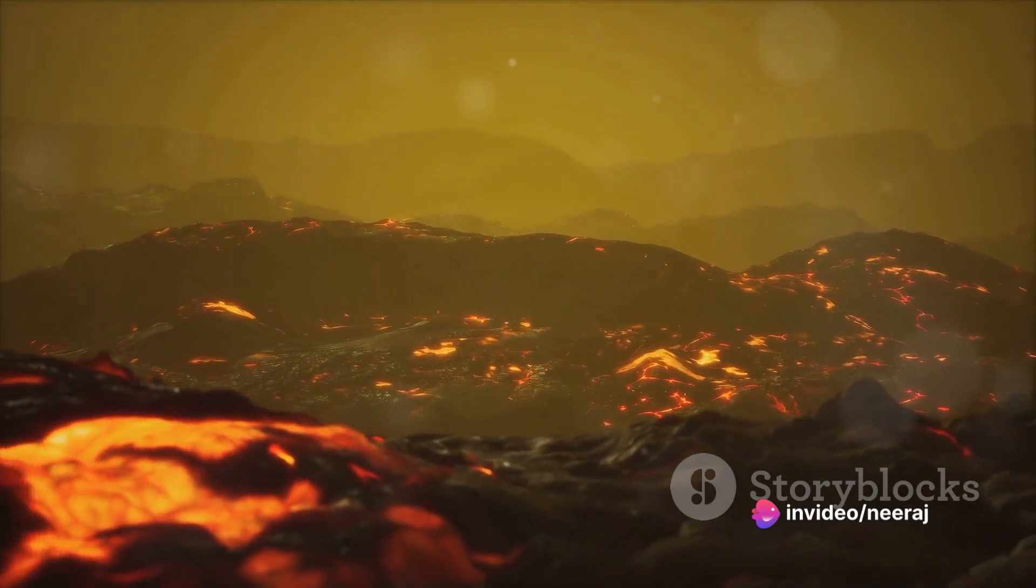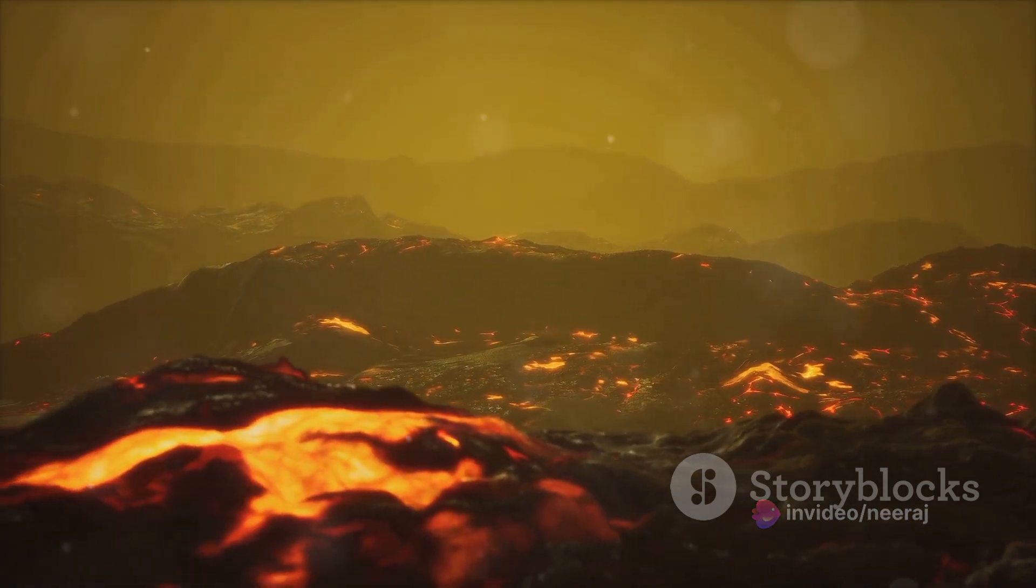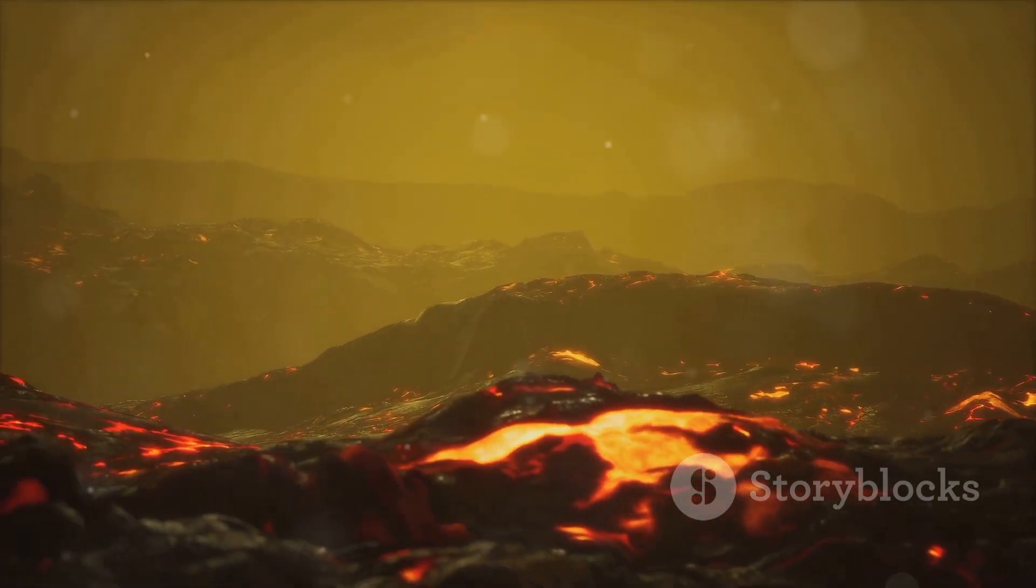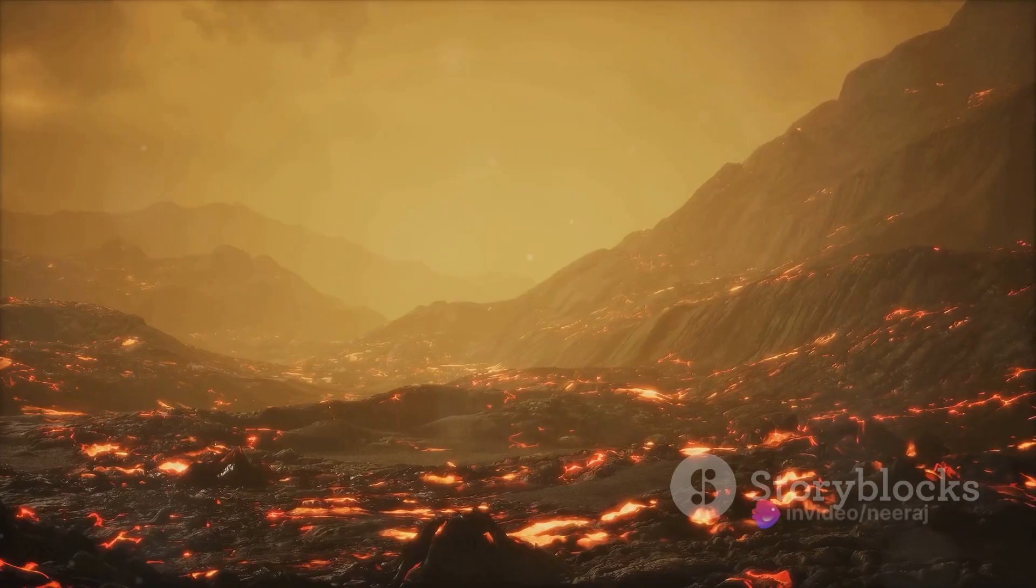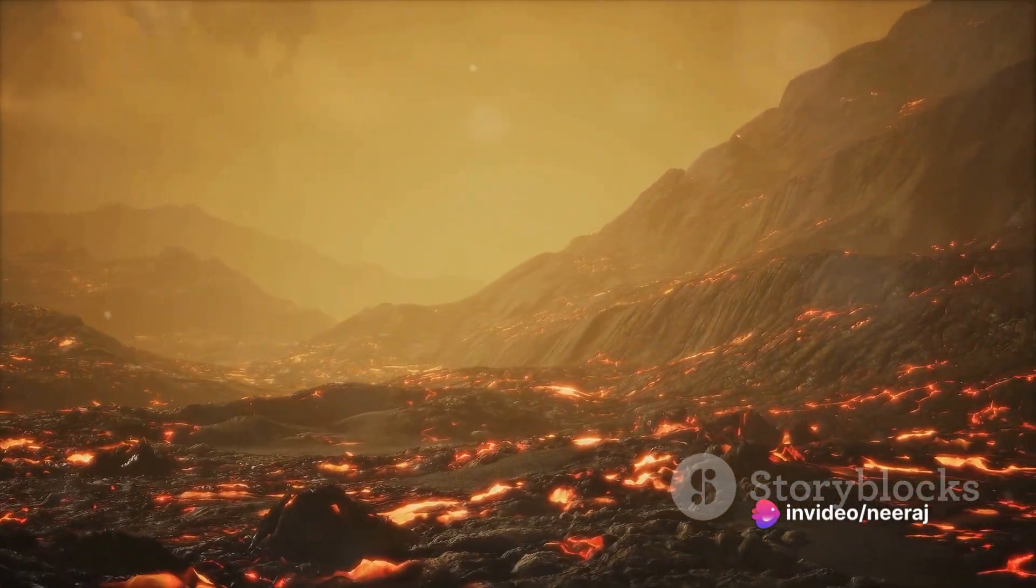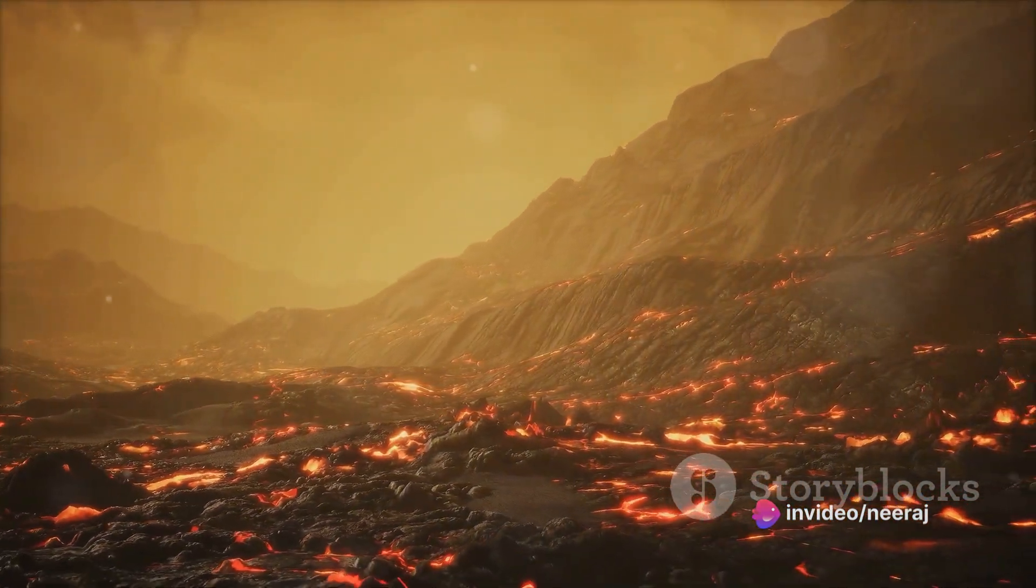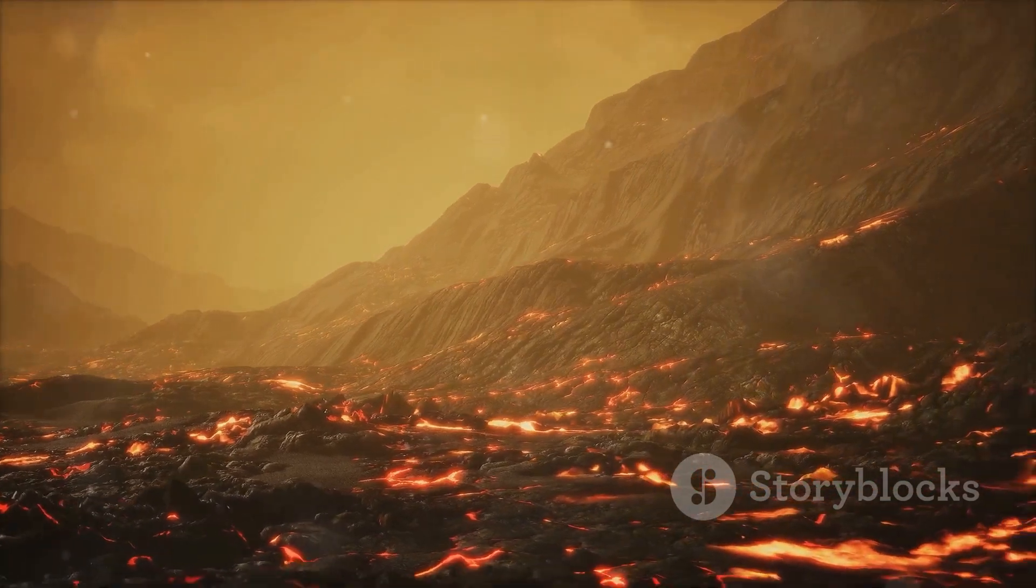And then there's the constant volcanic activity. Venus is riddled with thousands of volcanoes, some of which are still active today. This makes it one of the most volcanically lively places in our entire solar system. The constant eruptions spew large amounts of sulfur dioxide into the atmosphere, contributing to Venus's thick, toxic air.